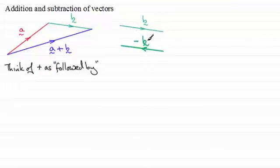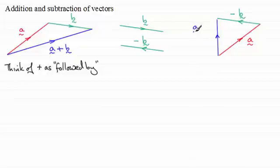So if I took the vector a again and this time took the vector negative b and put it on the end of a, so I end up doing a plus minus b, then that's going to be this vector from here to here. So this is the vector a followed by the vector minus b.